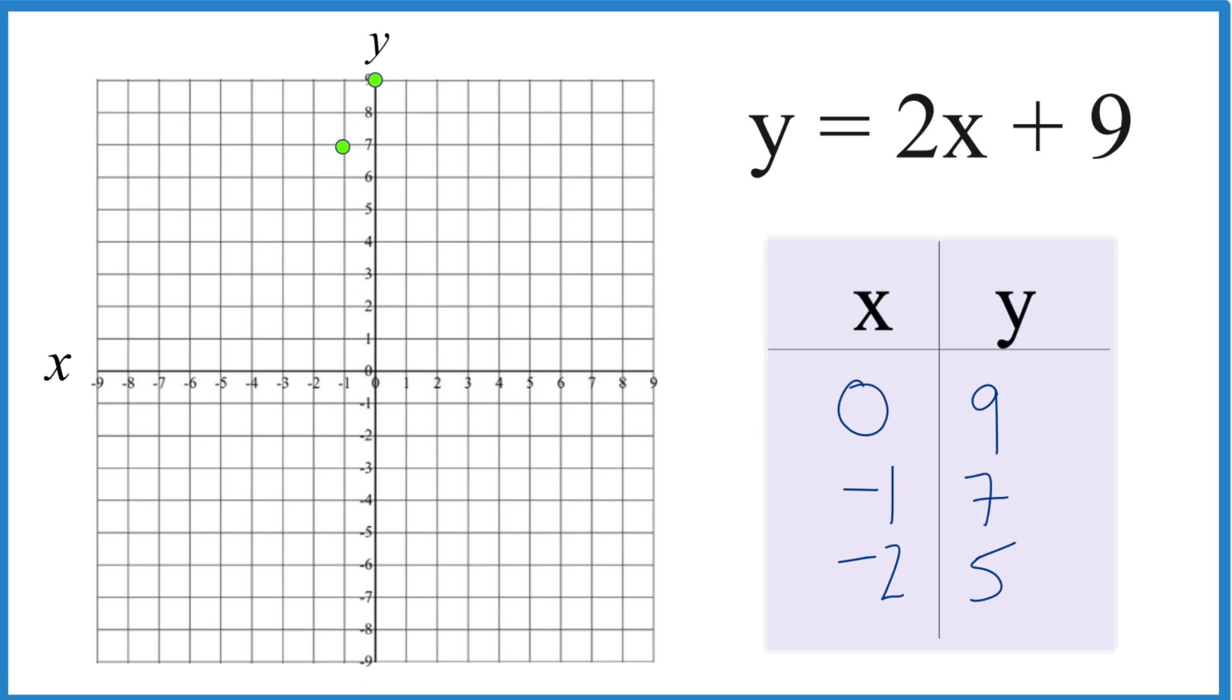We could graph with 2 points, but probably better to do 3. x is negative 2, y is 5. So you can see they all line up real nice. Let's put a line through that.